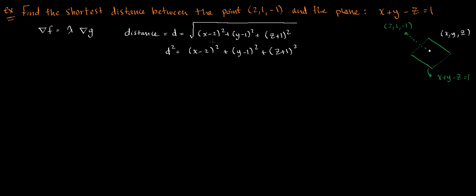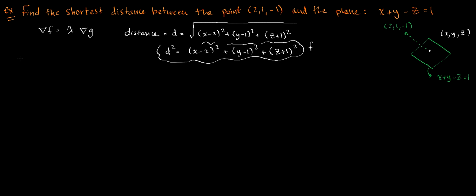This gives us the same point, because the coordinates x, y, z that give the shortest distance — the smallest value for d — are the same coordinates that give the smallest value of d squared. So instead of dealing with the square root, we square both sides knowing we'll get the same point at the end. We can call this our function f. Now we have f, we need to find g. And g is just the equation of the plane, because whatever point we find, it has to lie in the plane. The constraint is x plus y minus z equals 1, and we call it g.